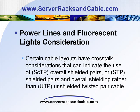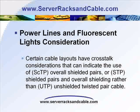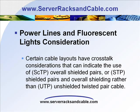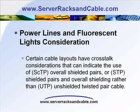There are also considerations when the cable runs near power lines or fluorescent lights, where there is a possibility of increased crosstalk that may have to be dealt with. In a well-designed data center cable layout, there are often four separate layers of cables including copper cables, fiber cables, power cables, and ground lines. Certain cable layouts have crosstalk considerations that can indicate the use of SCTP overall shielded pairs or STP shielded pairs in overall shielding, rather than UTP unshielded twisted pair cable.